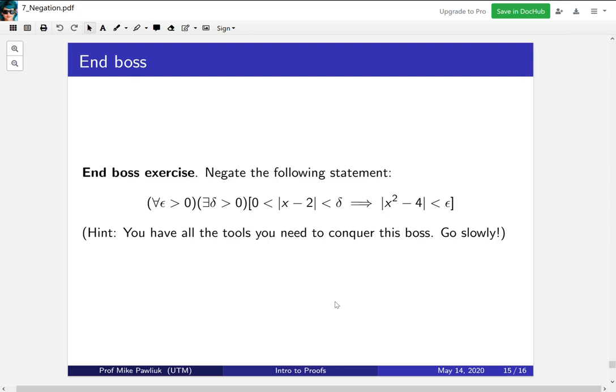The following exercise is the end-boss exercise. So negate the following statement. For all epsilon greater than 0, there exists a delta greater than 0, such that 0 is less than or equal to the absolute value of x minus 2, which is less than delta, implies the absolute value of x squared minus 4 is less than epsilon. So you've probably seen this before. This is a calculus definition. And while it looks scary, you have all of the tools you need to conquer this. Just go slowly and work one step at a time. Also, you don't need to know any calculus to answer this problem.